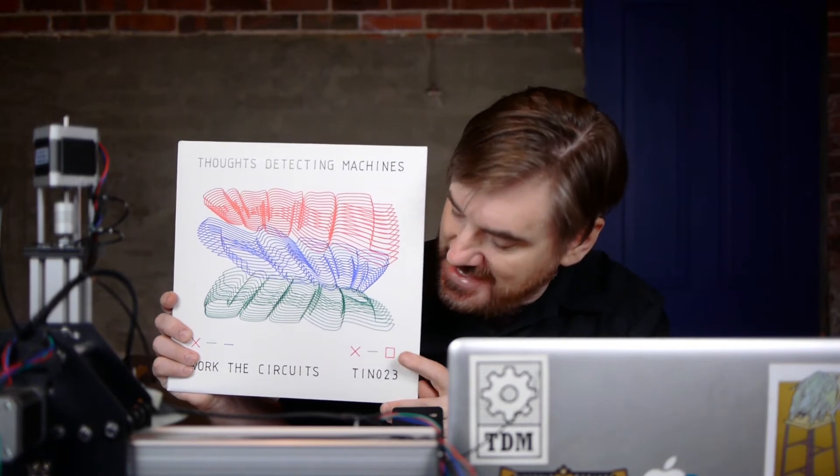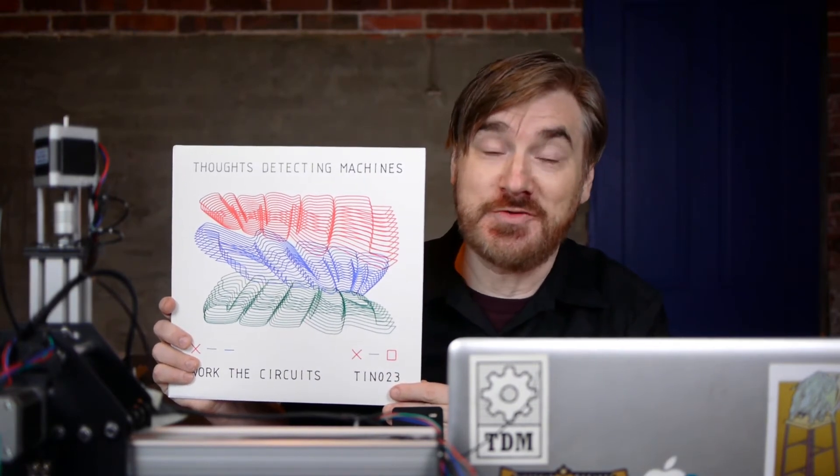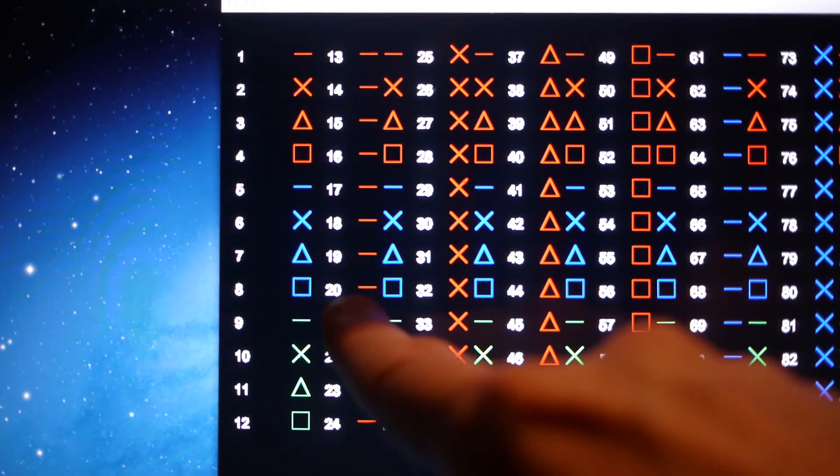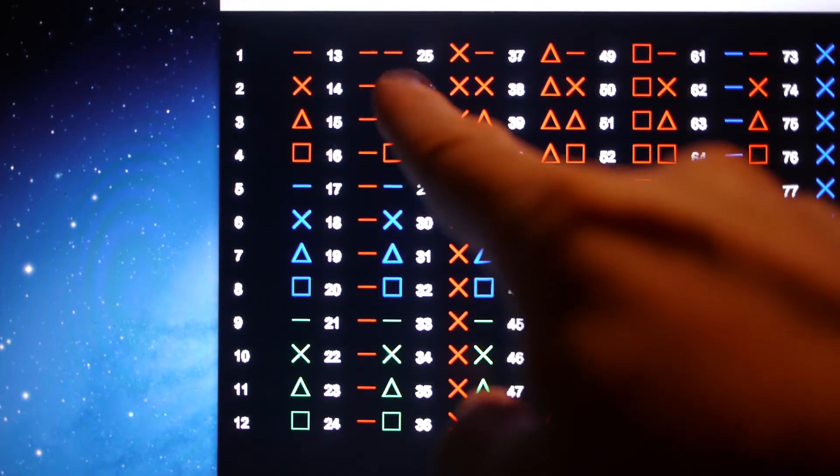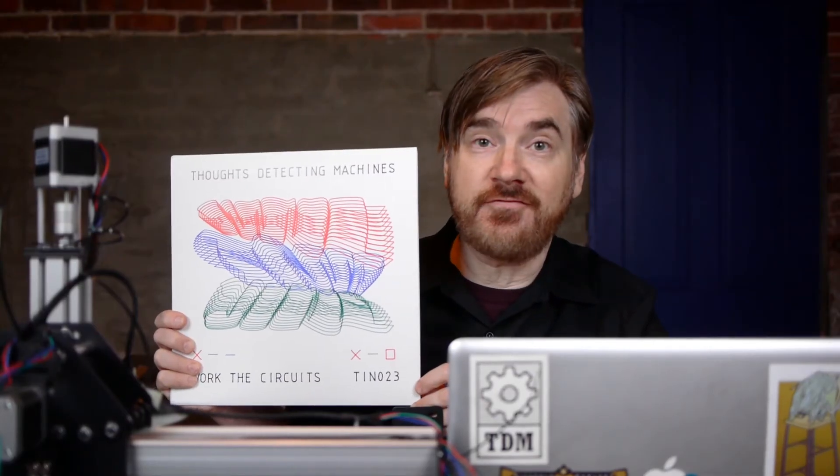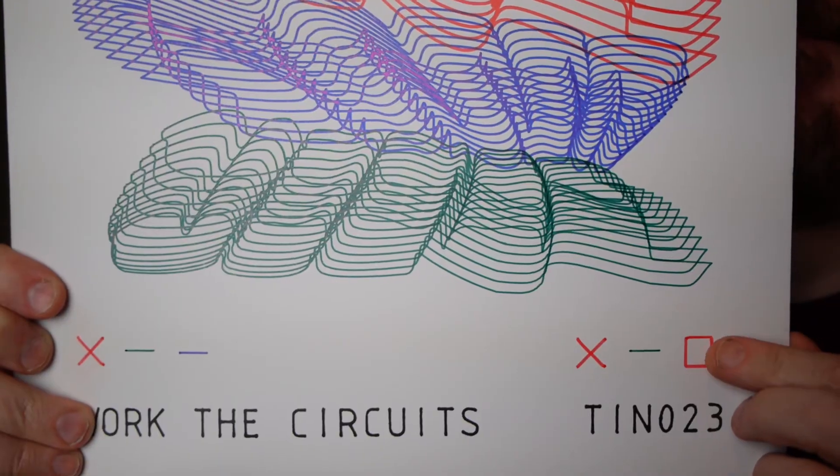Each record is also individually numbered. That's the symbols down here. It's a bijective base 12 system, which means it has 12 symbols and no zero. So you've got 1 through 12 here, and then you add a 1 to get 13, 14, 15, and so on. It's a limited edition of 400, which this is 400 right here.